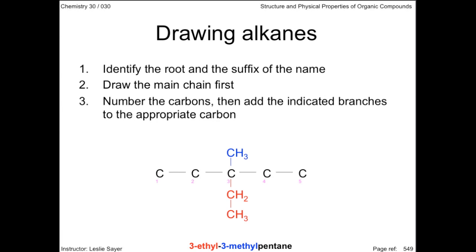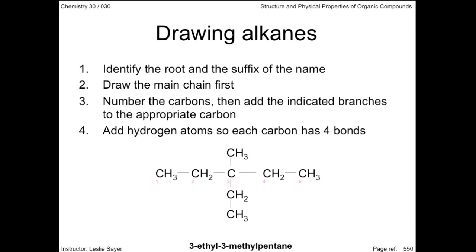Third, number the carbons, then add the indicated branches to the appropriate carbon. The carbons can be numbered left to right or right to left — it doesn't matter as long as it's in sequence. In this case, carbon 3 gets both branches. Whether it's the methyl branch or the ethyl branch on top makes no difference. Add hydrogen atoms so each carbon has four bonds, completing the condensed structural diagram.